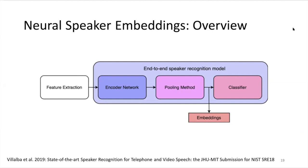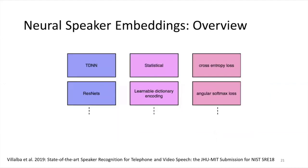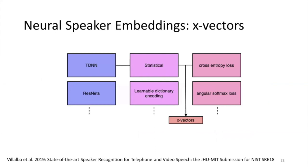Various work has proposed different improvements for each of these components. For example, TDNN and ResNet are typical choices for the encoder network. Statistical pooling and the more recently introduced learnable dictionary encoding are two examples of the pooling layer. Cross-entropy and angular softmax losses are two objectives to train the speaker recognition model end-to-end. The conjunction of TDNN, statistical pooling, and cross-entropy loss produces X-vectors. The conjunction of ResNet, the learnable dictionary encoding layer, and angular softmax loss produces LDE embeddings.